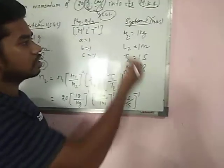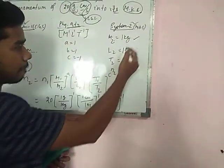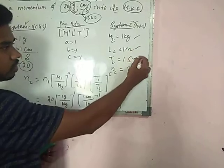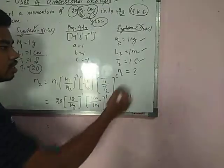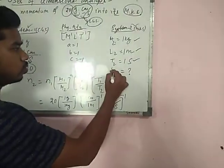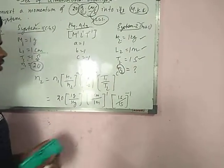Now for system 2: M₂ is 1 kg, L₂ is 1 meter, and T₂ is 1 second. We have to find out the value of N₂.